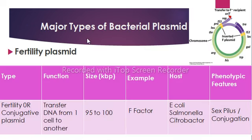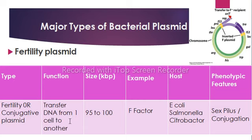Then we have major types of bacterial plasmid. Number 1: Fertility plasmid or conjugative plasmid. It can be defined as a plasmid which can be transferred from one bacterium to another. The fertility factor was first discovered in E. coli and is also called conjugative plasmid. This plasmid helps in the formation of sex pili, and the plasmid is transferred from one bacterium to another through conjugation, which is a special type of sexual reproduction in bacteria. The size of fertility plasmids is about 95 to 100 kilobase pairs. The fertility plasmid also has genes for cell attachment and contains insertion sequences which help in plasmid insertion into host chromosomes, forming episomes.